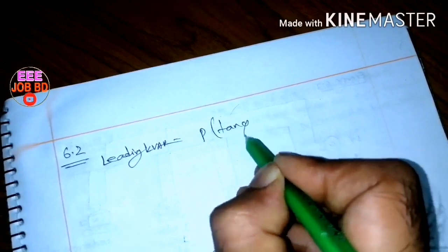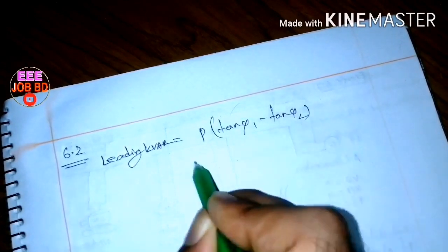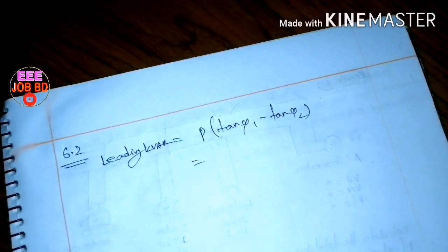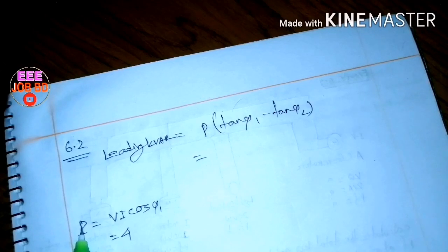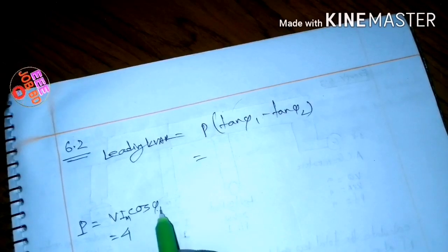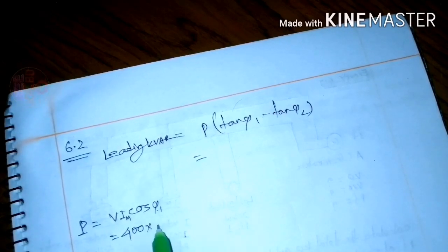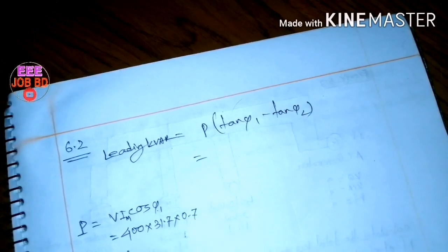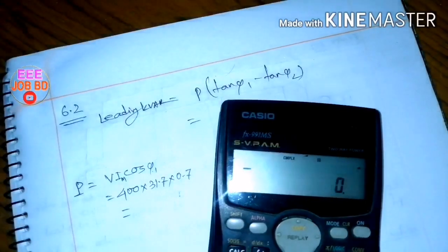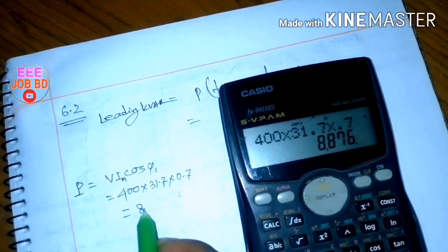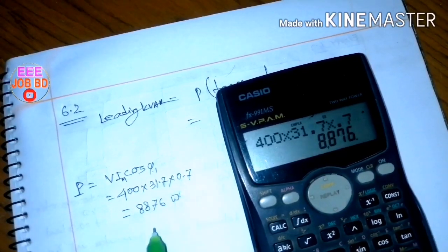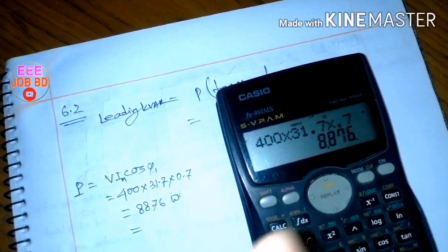Using the power triangle method, P equals V times I times cos phi. The voltage is 600 volts, the motor current is 31.7 amperes, and cos phi is 0.7. So P equals 600 times 31.7 times 0.7, which equals 8876 watts, or approximately 8.876 kilowatts.